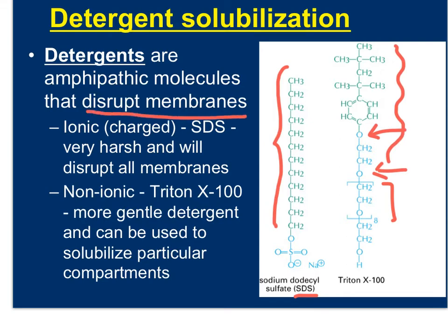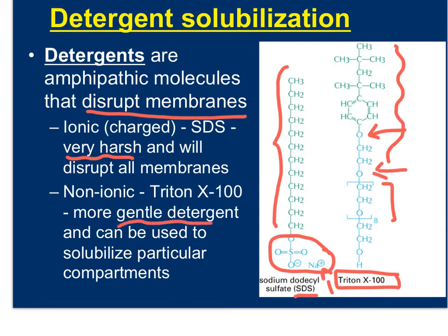So we can break open membranes. Some of these detergents are charged — SDS has a negative charge on it. It's called sodium because it's actually an ionic detergent, versus Triton X100, which is a non-ionic detergent. SDS is very strong and very harsh, and it will break open all membranes: the plasma membrane, early endosome, late endosome, lysosome, nuclear membrane, and ER. Non-ionic detergents are a little more gentle and can be used to solubilize particular compartments, which is a very useful tool for cell biologists.